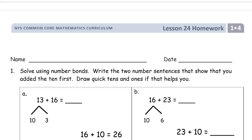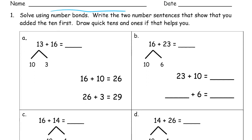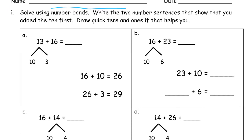Welcome to the homework for lesson 24. This is module 4 of grade 1. Get your name on here first. This is about solving using number bonds. Write the two number sentences that show you added the 10 first and draw quick tens and ones if that helps you.